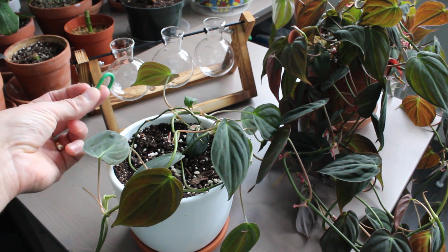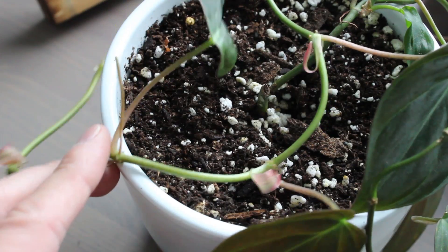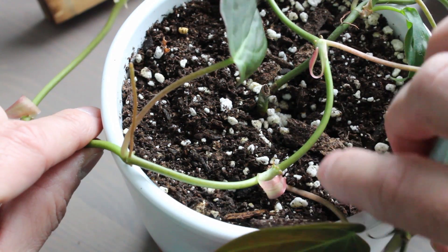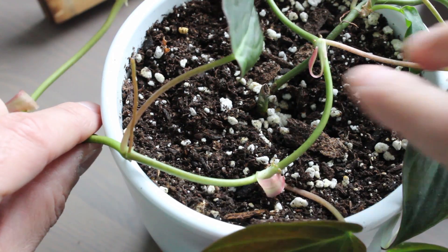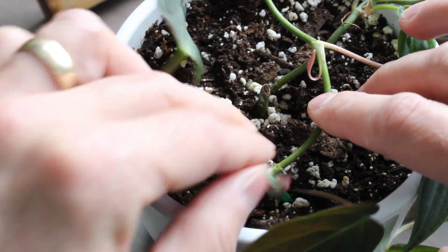I made these little almost like clips just out of flexible plant wire. This is basically just a little bit of a trial and error for me. I'm going to take one of these little clips and I'm going to find a leaf node and it has some aerial roots.